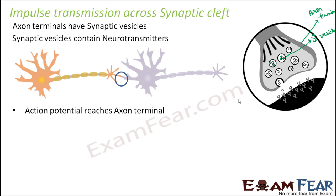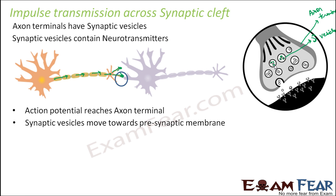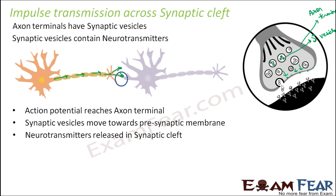When the action potential reaches the axon terminal — because the action potential is carried throughout the length of the axon — the synaptic vesicles move towards the presynaptic membrane. As soon as the synaptic vesicles touch the presynaptic membrane, the neurotransmitters will be released into the synaptic cleft, that is, in the gap area.